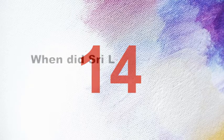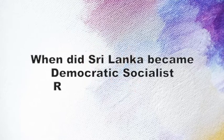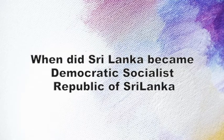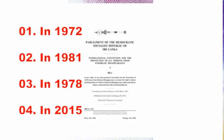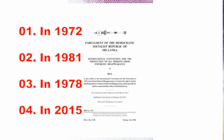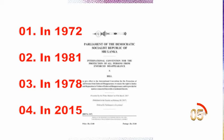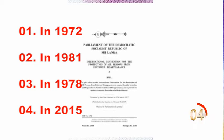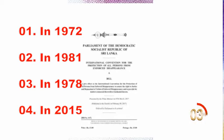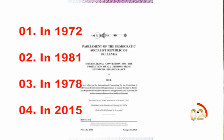Question 14: When did Sri Lanka become the Democratic Socialist Republic of Sri Lanka? 1. In 1972. 2. In 1981. 3. In 1978. 4. In 2015.